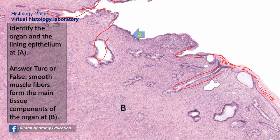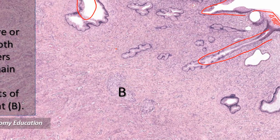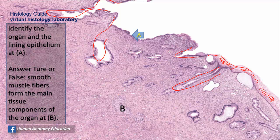The outer part of the cervix surrounding the external os, and the part extending into the vagina, is lined by the same epithelium as the vagina — stratified squamous non-keratinized epithelium. The statement that smooth muscle fibers form the main tissue component of the cervix is false. The main bulk of the cervix is formed by fibrous tissue — fibroblasts and collagen fibers — with very few muscle fibers, unlike the body and fundus of the uterus which are composed of myometrium. The cervix dilates during delivery; it does not contract.